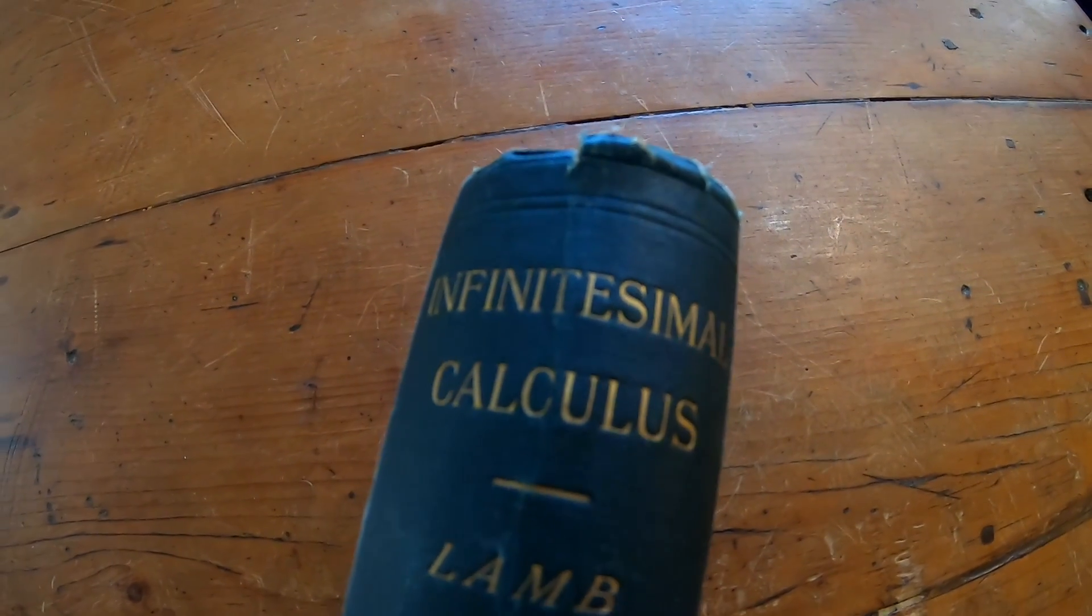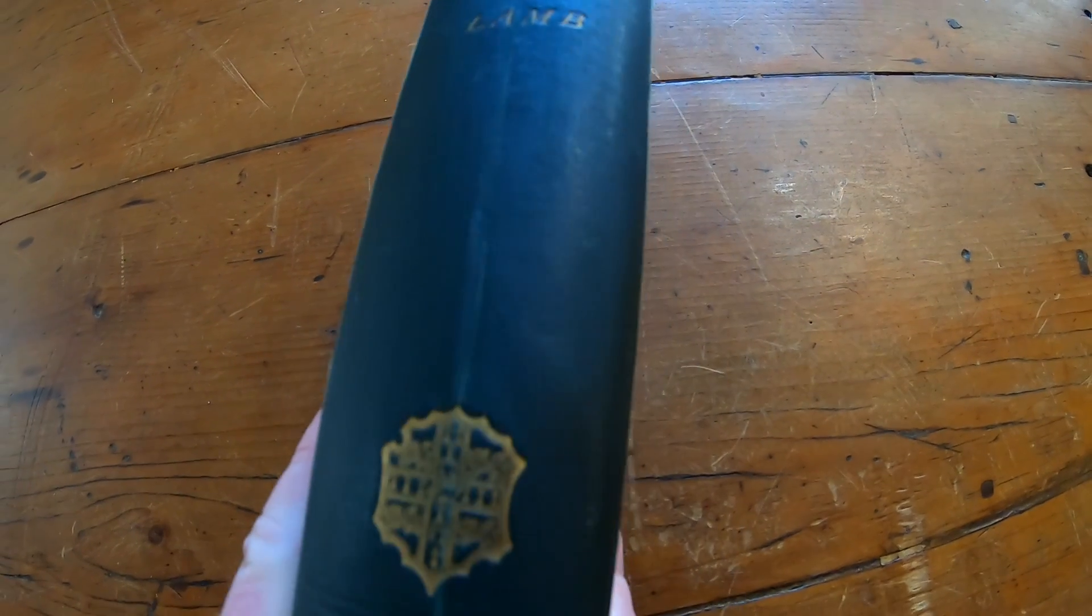This is a book from the 1800s. I actually had to order this book from England and it took a while to get, but I did get it and it's just absolutely amazing. I can actually smell the book from where I'm holding it. That's how old it is. Infinitesimal Calculus by Lamb, Cambridge University Press. This book is absolutely amazing.